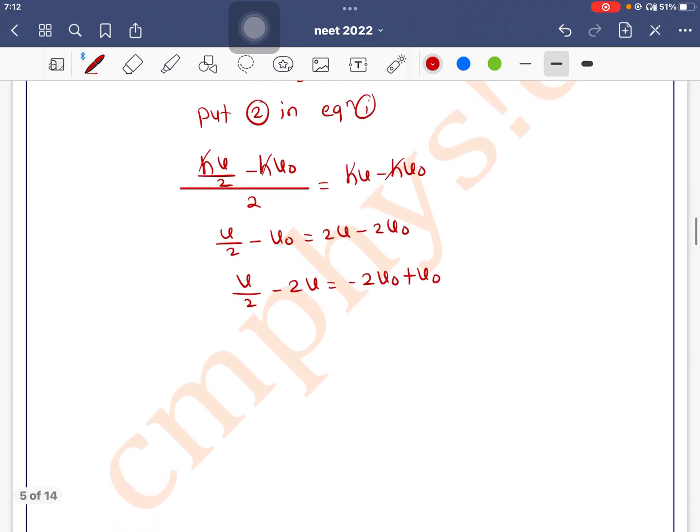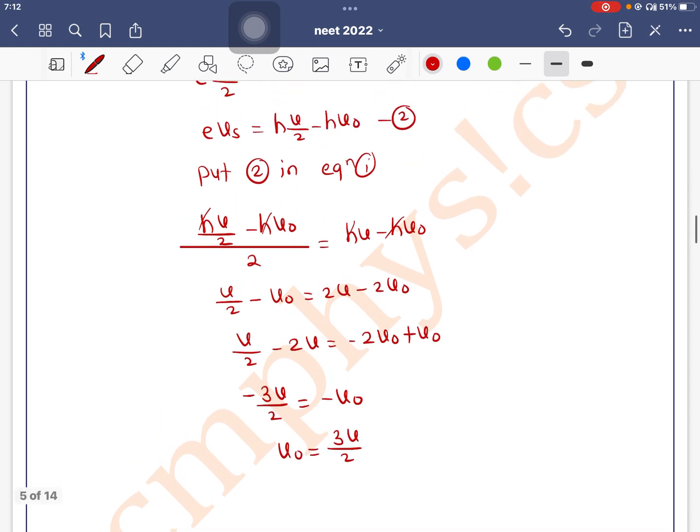So nu by 2 minus 2 nu equals how much? Minus 4 nu plus... minus 3 nu by 2 equals minus nu0. So nu0 equals 3 nu by 2.